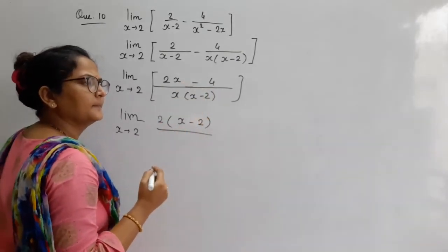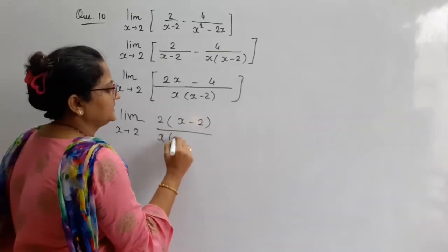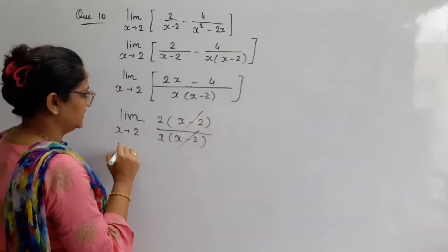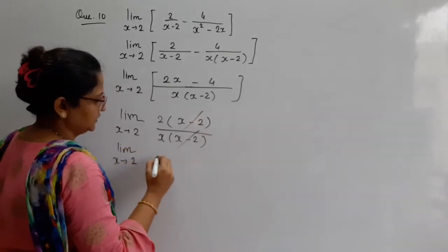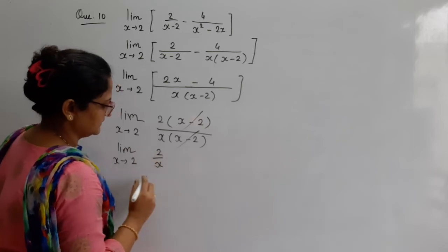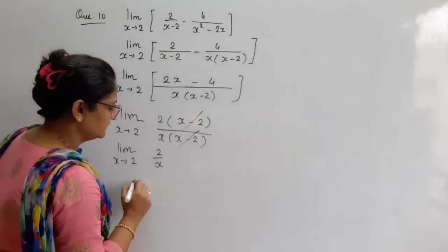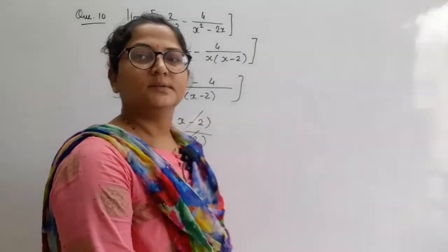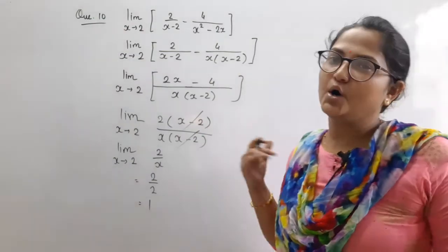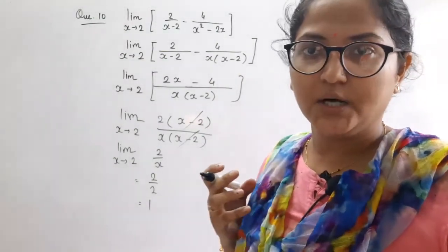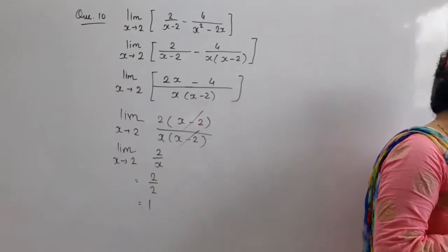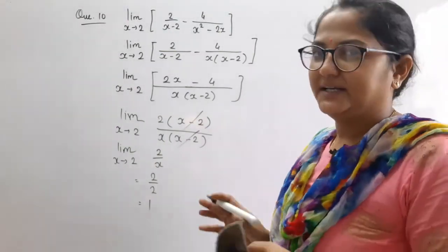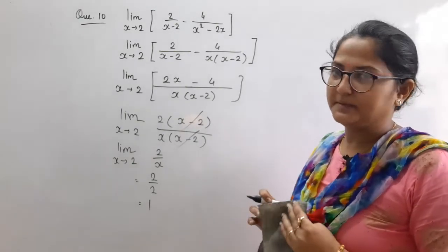Yeh a gaya ud. x minus 2. To ab limit x tends to 2. 2 by x. To value rakh dete hain. 2 by 2. Answer is 1. Very easy. Very simple. Isse easy simple or kya expect kar sakte hain. Sum number 11. Thoda sa high level ka hai. 11 number ka. But easy type ka hai. Agar LCM aata hai, no problem at all.